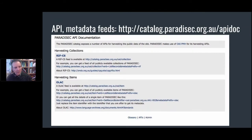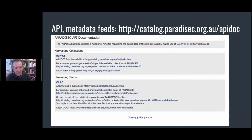We have an API and two feeds that we produce so people can link into our collections. RIFCS is at the collection level and that's what's harvested by Research Data Australia and other services. Trove also harvests that material. The OAI-PMH feed is primarily targeted at the Open Language Archives Community — linguists have been very good at setting up services based around language identifiers. The OLAC page allows you to look at all the material produced by any one of their 60 member archives for any given language — it's a fantastic resource.